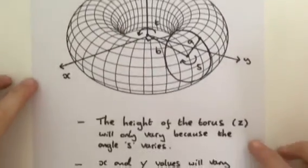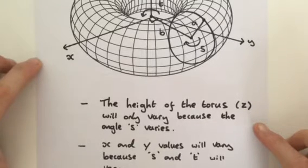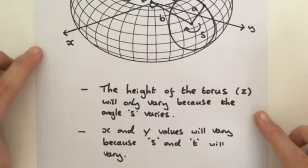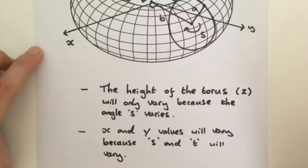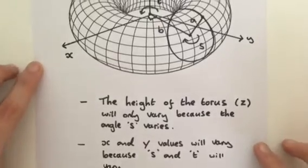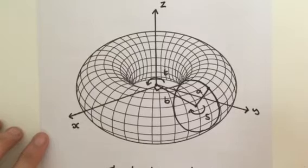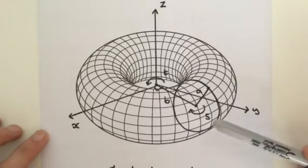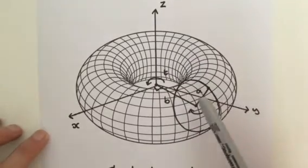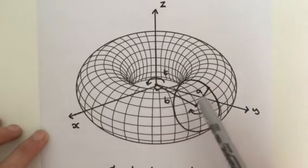So the height of the torus Z will only vary because the angle S varies, and the X and Y values will vary because S and T will vary. These are pretty basic points and of course it's easy to see that the Z value will only vary because S varies. T has got nothing to do with the height of the torus. It's simply the angle made as B sweeps around the Z axis at a constant level.